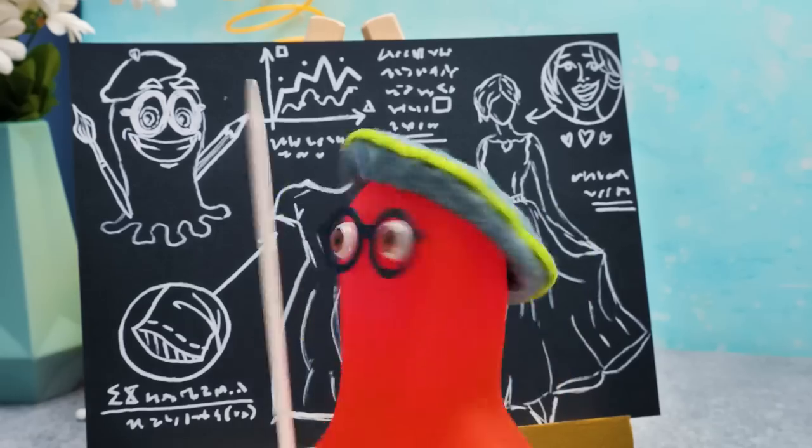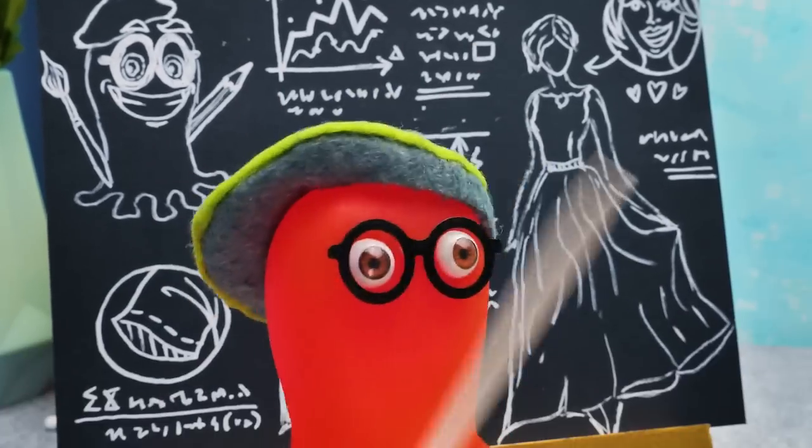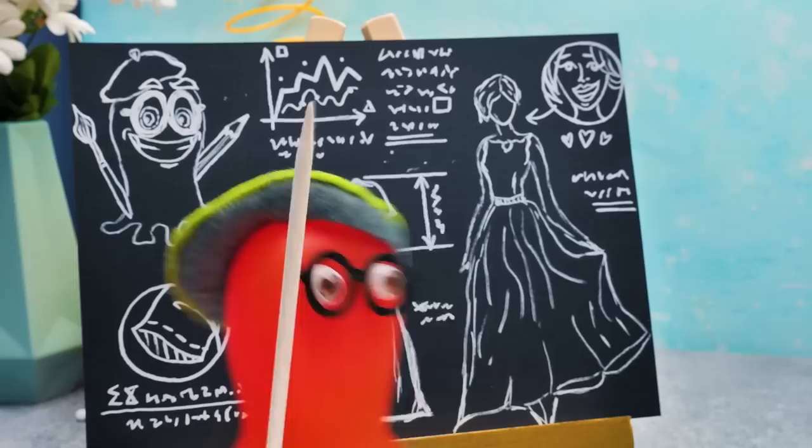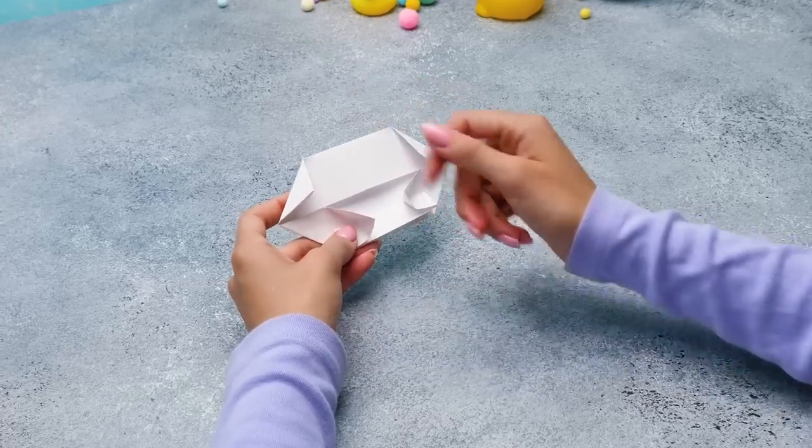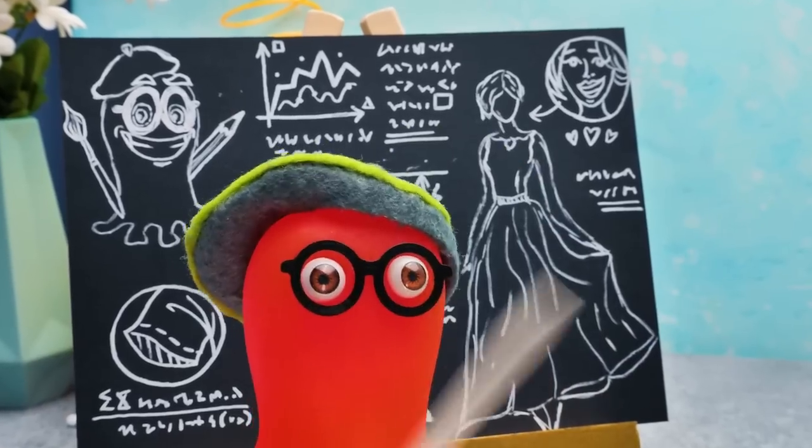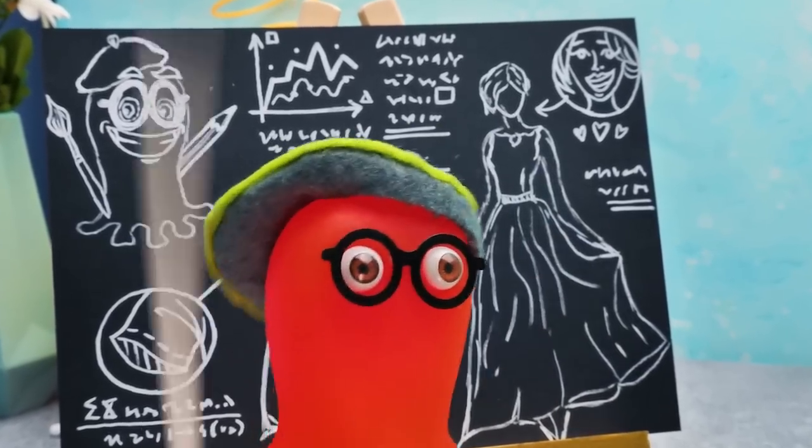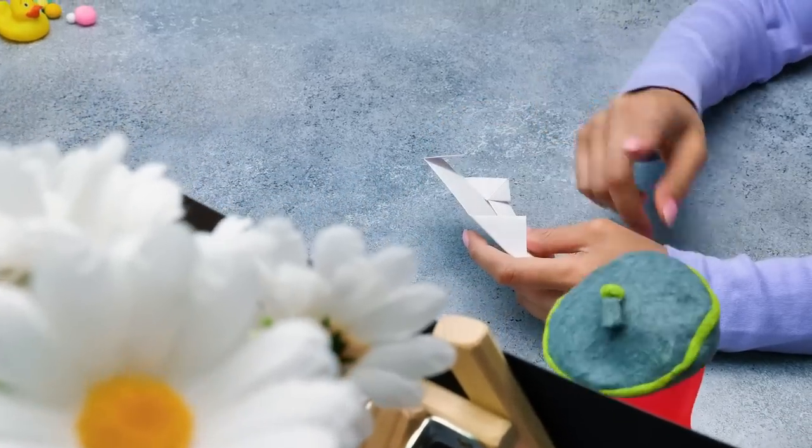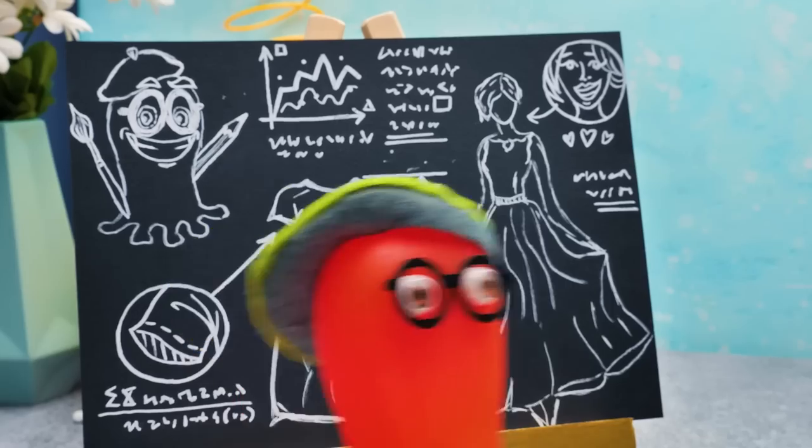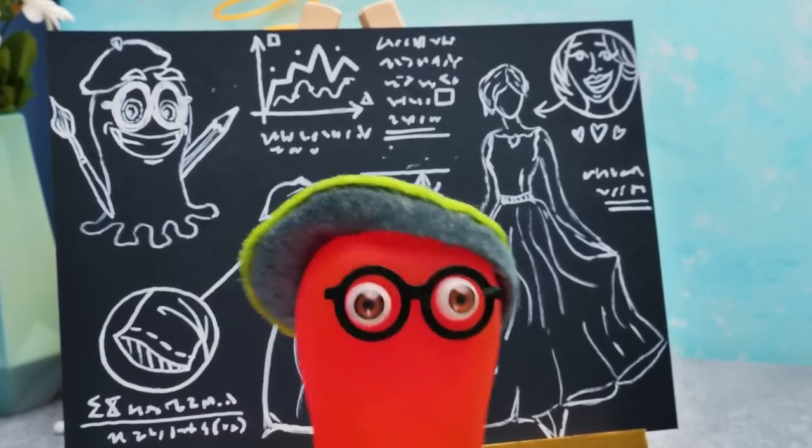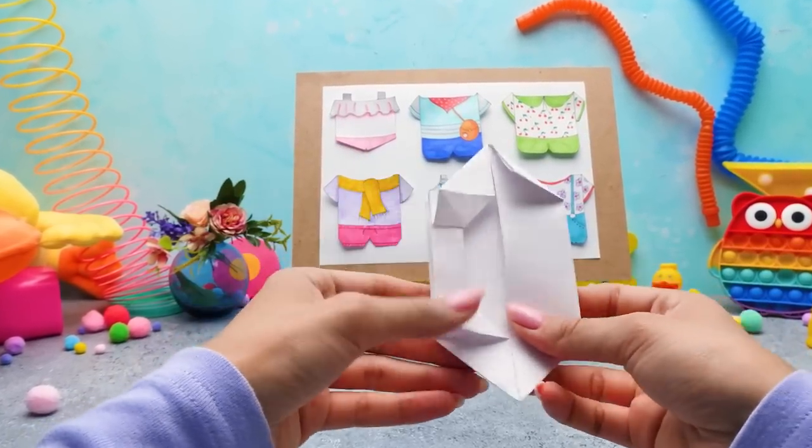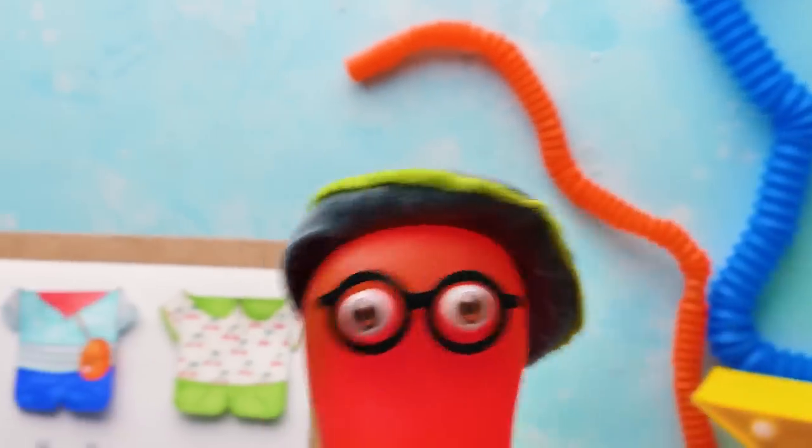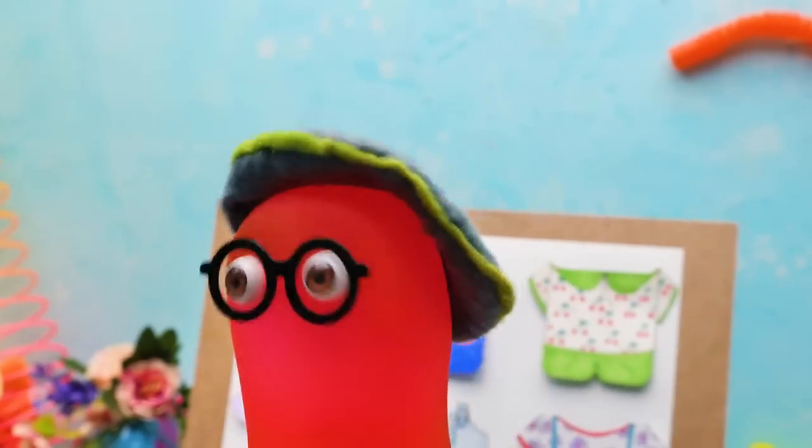But I still don't understand how you managed to do that so fast! Firstly, the Tibidabians choose a designer! In all of the cases, it was me! Then the designer comes up with an outfit! And I can create a dozen in an hour! The greatest designer, Sam! Can I ask you something? Sure! I'm ready to answer any question from my fans! Can you sew an outfit as fast as you can come up with one? That's not my business! I'm an artist! A source of ideas!